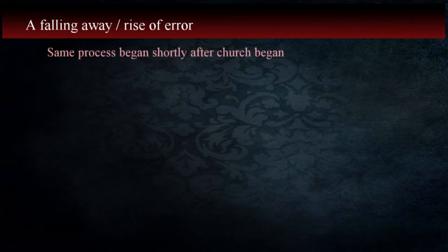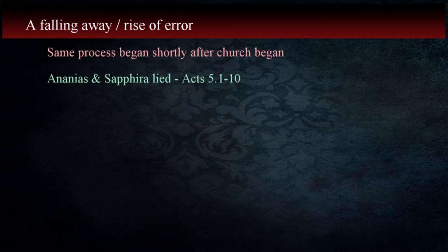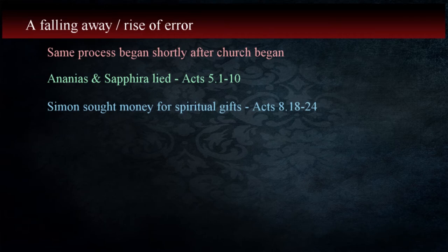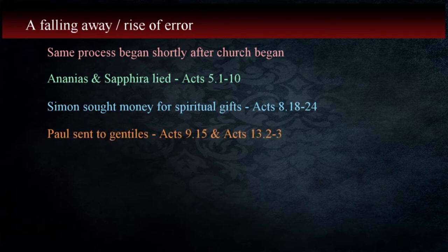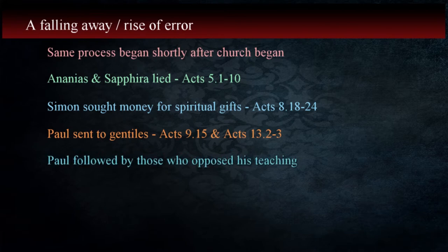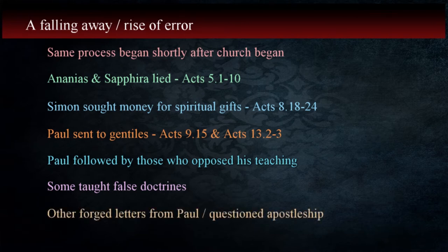After the church was established, it wasn't long before people began to lie, as in the case of Ananias and Sapphira in Acts 5:1-10, or who tried to monetize spiritual gifts as Simon the sorcerer did in Acts 8:18-24. Paul was sent to the Gentile world to preach the gospel in Acts 9:15 and 13:2-3, and as he did so, we see two things happen. Jews who disliked the preaching of the apostle stirred up crowds against him and followed him from city to city, turning people away from the truth. There were others who began to teach things contrary to the gospel, and some forged letters claiming that Paul had written them. Others disputed the apostle's authority, and Paul answered these individuals and planned on confronting them.